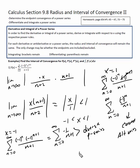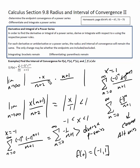So our interval of convergence for f of x is going to be negative one to one, but one is going to be closed because it converges at one and diverges at negative one. Now we've got to do the same for f prime, f double prime, and the integral of f of x.